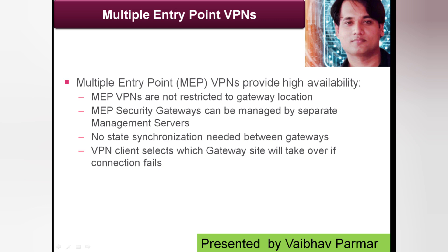MEP security gateways can be managed by separate management servers, and there is no state synchronization needed between gateways. If one MEP gateway fails, the current connection is lost, but another MEP gateway picks up the next connection. The VPN client selects which gateway site will take over the connection should the first one fail. Cluster gateways make the selection themselves in a cluster XL deployment.